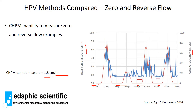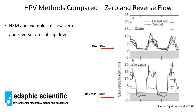There are examples where the cutoff has been up to 10 or more centimeters per hour. The heat ratio method, on the other hand, can measure slow, zero, and reverse rates of sap flow. Here are a couple of examples of sap flow measured in roots of plants. In the top graph, we have examples of slow rates of flow — between zero and 5 centimeters per hour — and the sensor is measuring quite accurately. In the bottom graph, we have an example of reverse flow, where in the grayed-out area values are less than zero, which we call reverse sap flow.